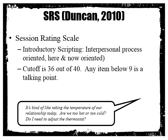The Session Rating Scale is what we're going to explore next. While the Outcomes Rating Scale measures functioning, the Session Rating Scale measures the relationship. When using the Session Rating Scale, your introductory scripting should be interpersonal — you should talk about the here and now of the relationship, because that's really what the SRS is about: how are we doing? The cut-off for the SRS is 36 out of 40, and any item below 9 is a talking point. Here's a script for introducing it: it's kind of like taking the temperature of our relationship today — are we too hot or too cold? Do I need to adjust the thermostat?